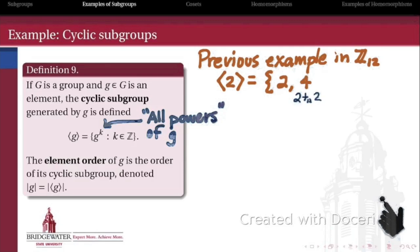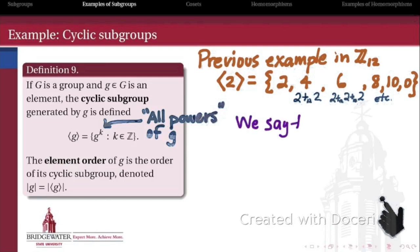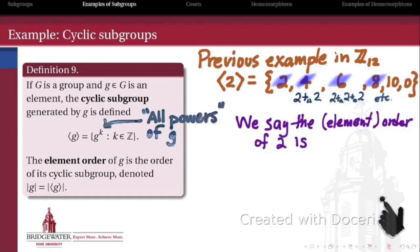The second power of 2 in the additive group means adding 2 to itself, giving 4. Adding 2 to itself 3 times gives 6, 4 times gives 8, 5 times gives 10, and when we add 2 to itself 6 times, we get 0. So the element order of 2 in the additive group of integers modulo 12 is 6 — it's the smallest power for which the element raised to that power gives the identity, and also the number of elements in the cyclic subgroup.